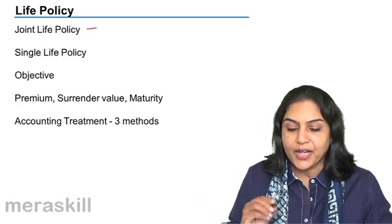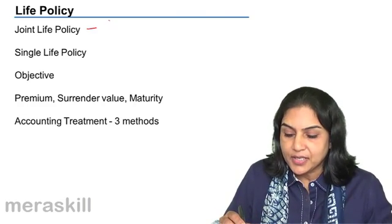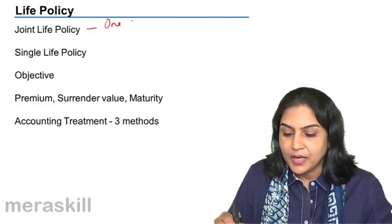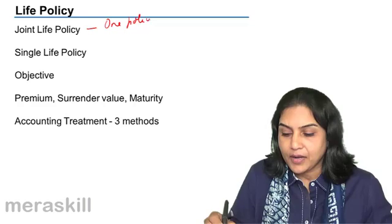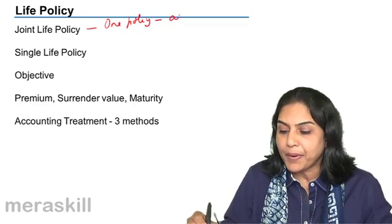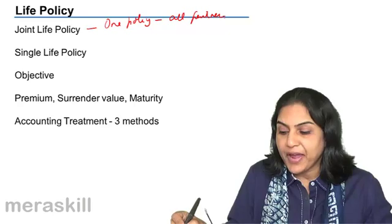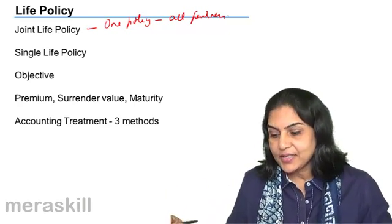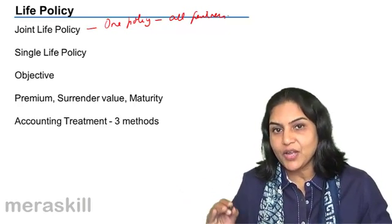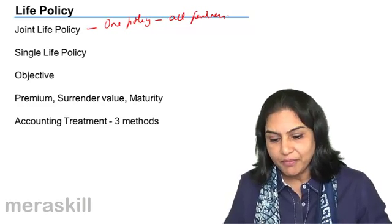There could be a joint life policy, that is one policy on the lives of all partners. If any one partner dies, the policy matures.